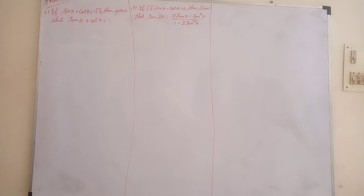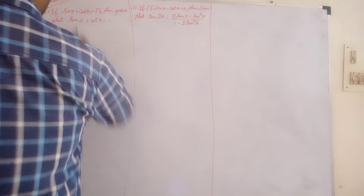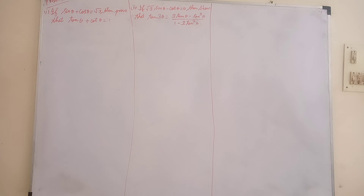Exercise 6.1, trigonometry, problem number 7. If sin θ + cos θ = √3, then prove that tan θ + cot θ = 1.